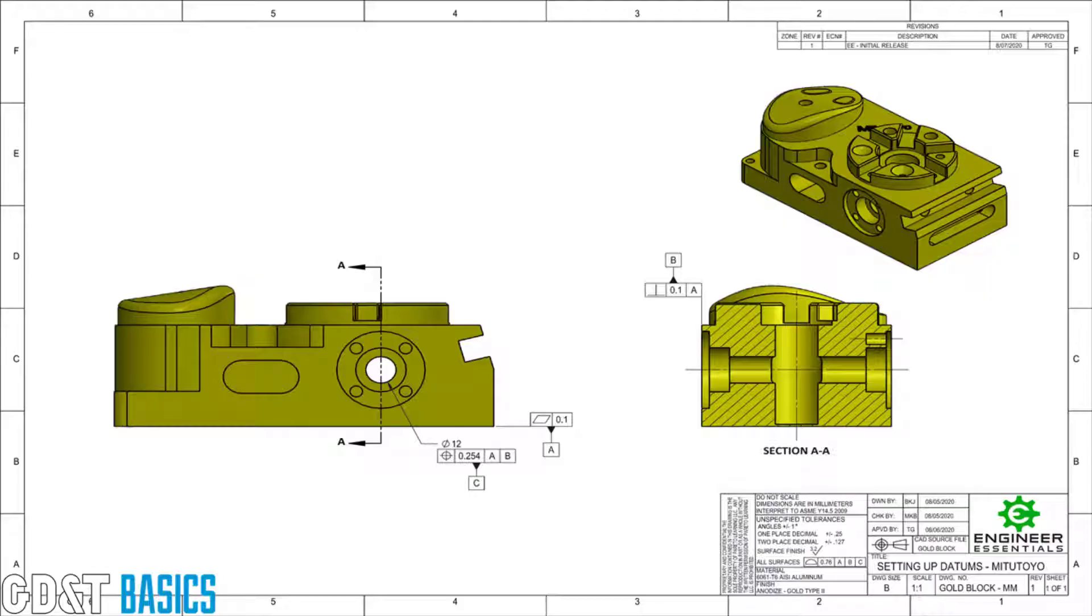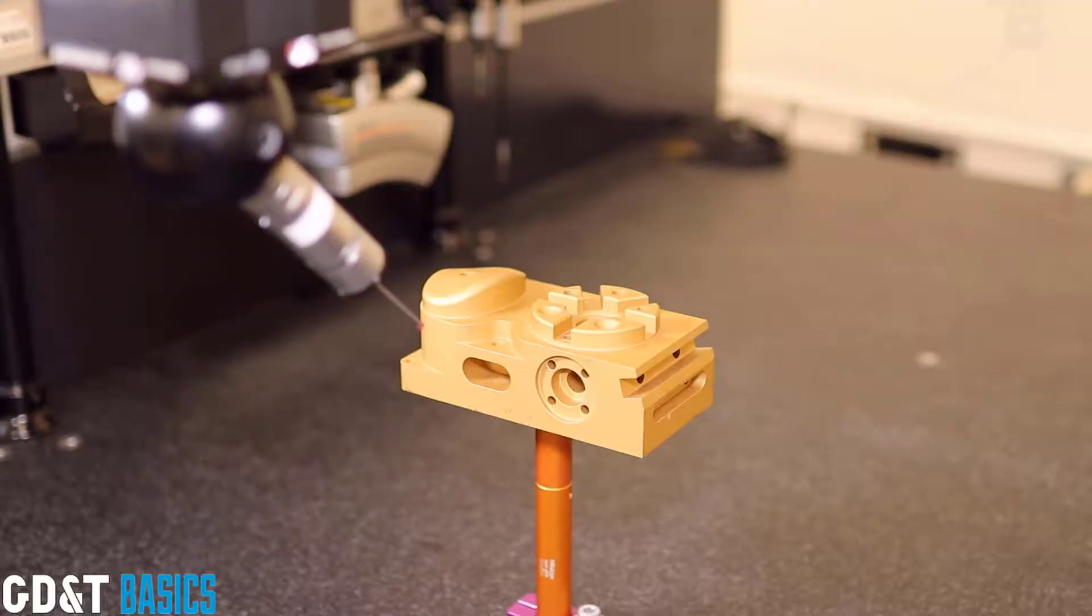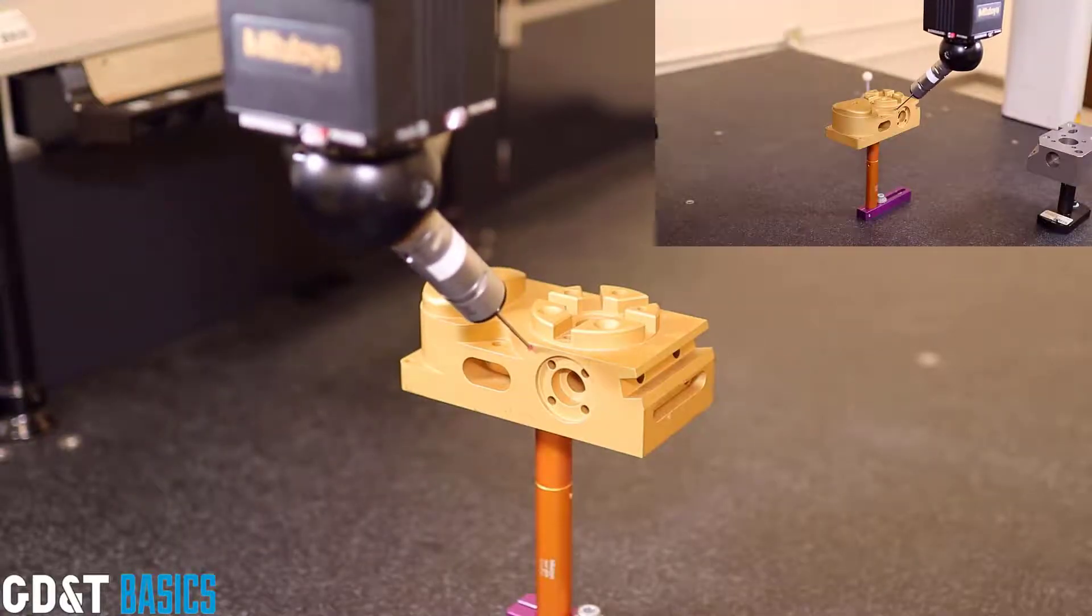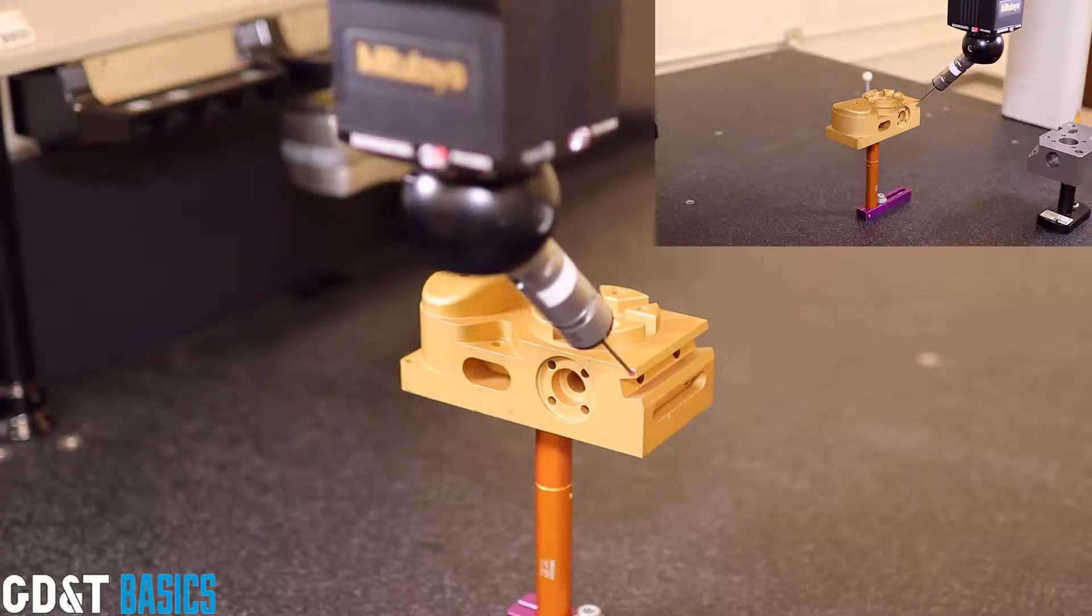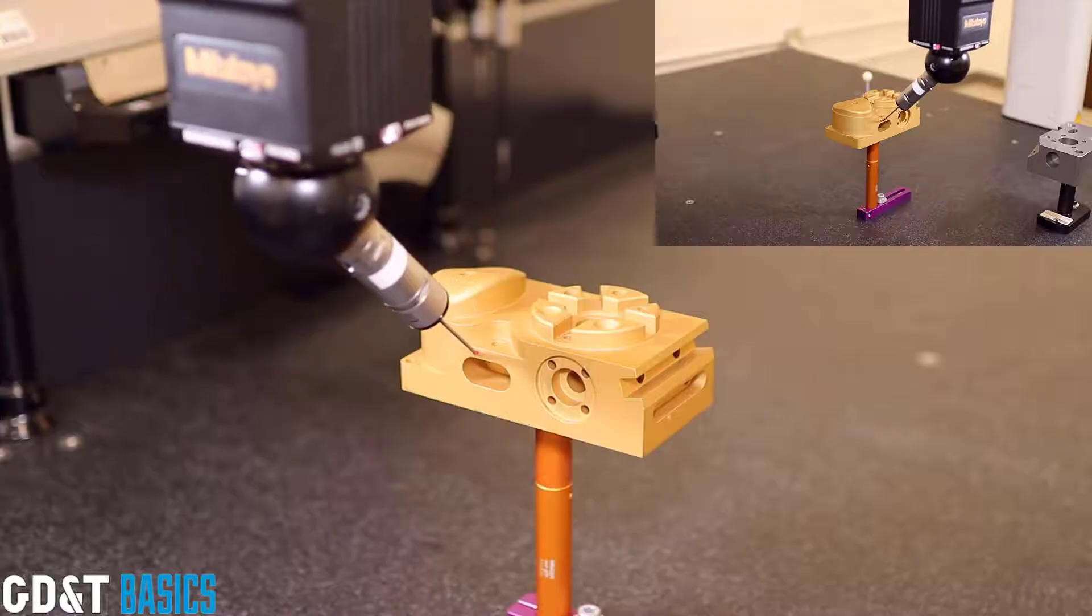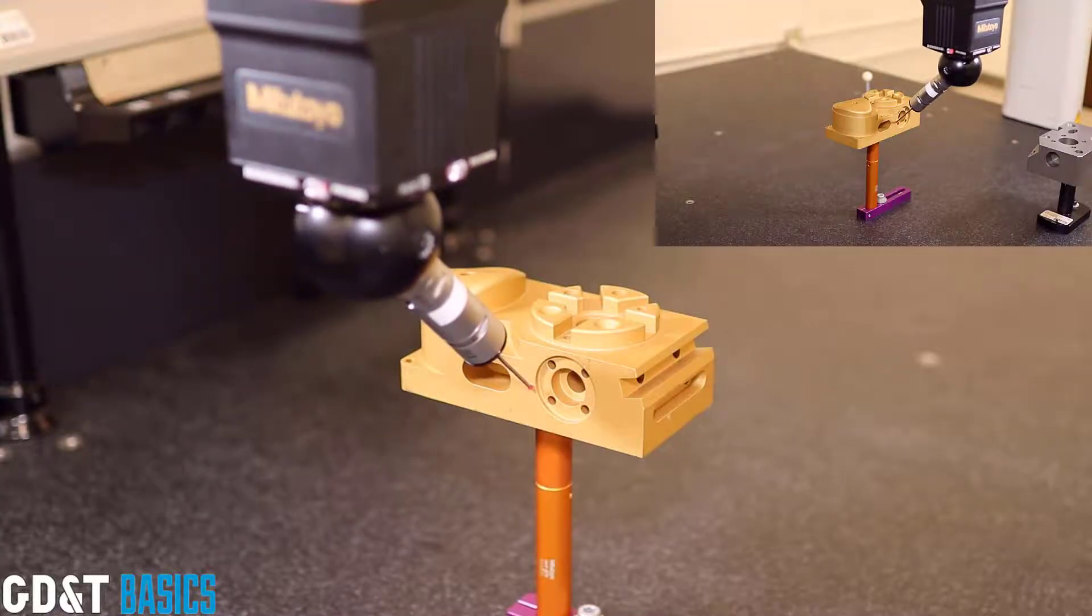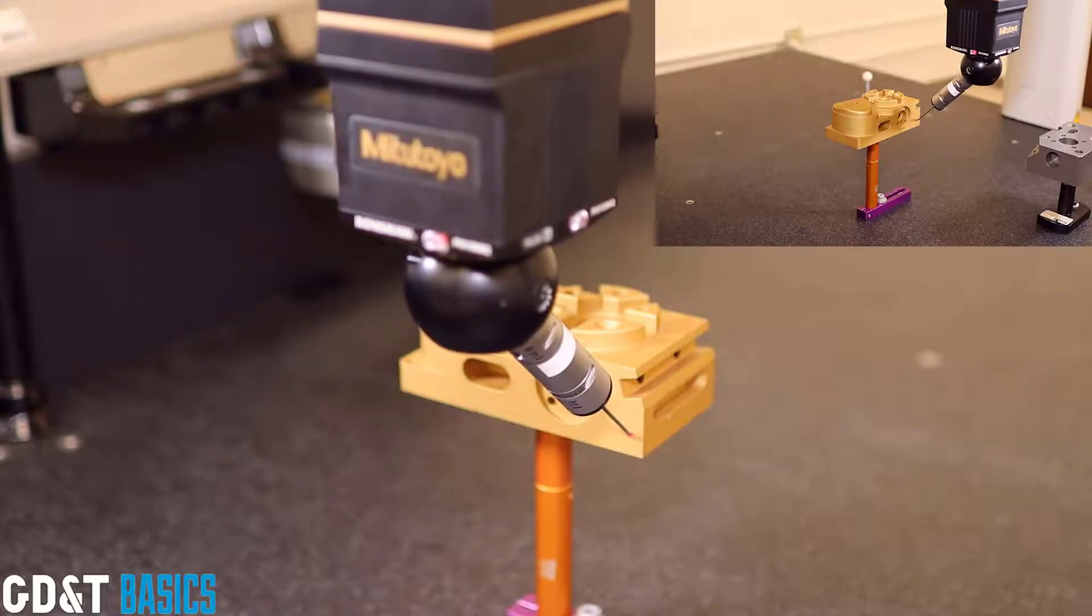Let's take a look at what this looks like on the CMM. So there are obstacles here that Javier has to avoid, like counterbores and slots and whatnot, all of the radii around the part. If he did accidentally probe one of those, he would get an error. But he has managed to avoid every one of them here.